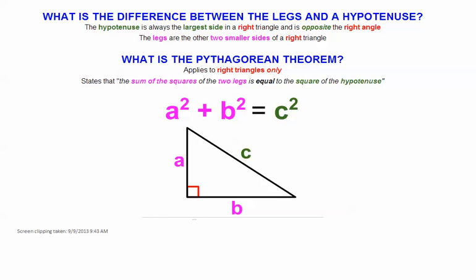Just to show you here, in this picture at the bottom, A and B are both legs and C is called the hypotenuse. The hypotenuse is always opposite the right angle, and it always is the longest side of a right triangle.